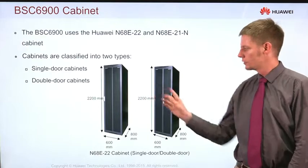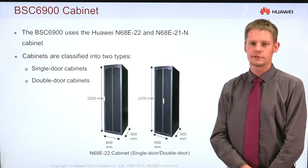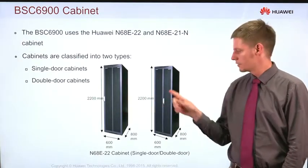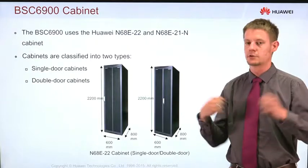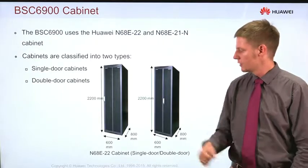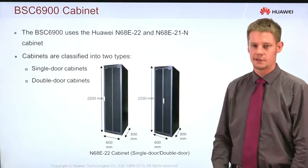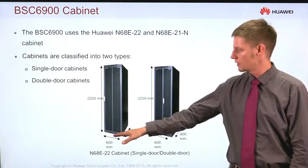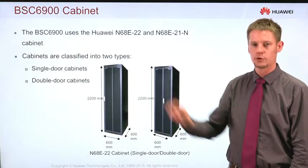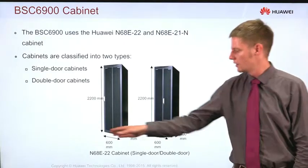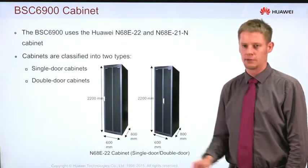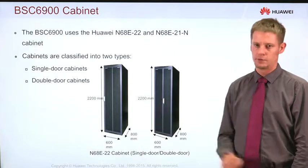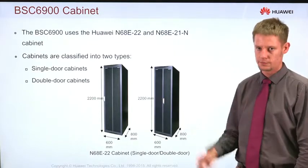We have two different versions of the cabinets: one is with one door, the other one is with two doors, but the dimensions stay the same. This means the one cabinet is always 2200 millimeters high, 600 millimeters wide, and 800 millimeters deep for both versions.